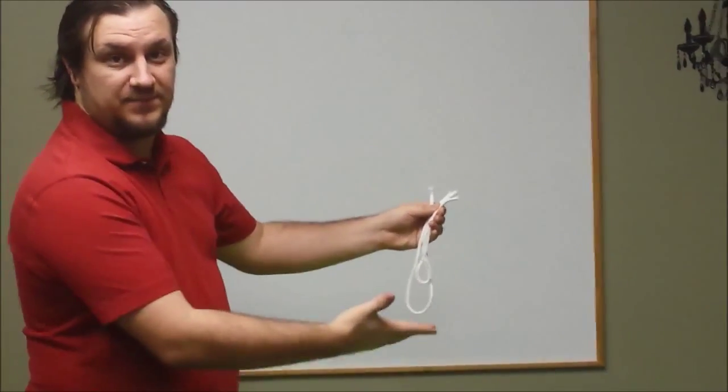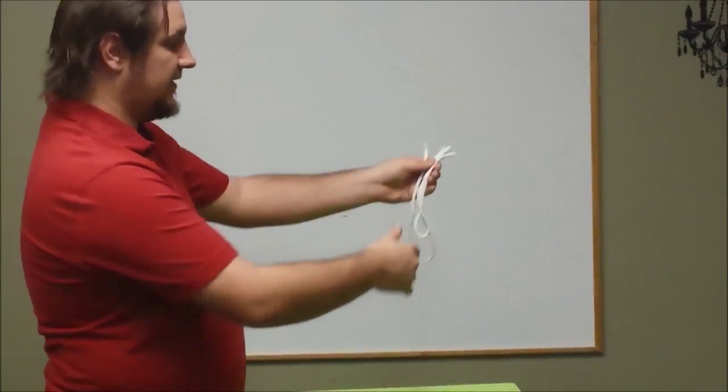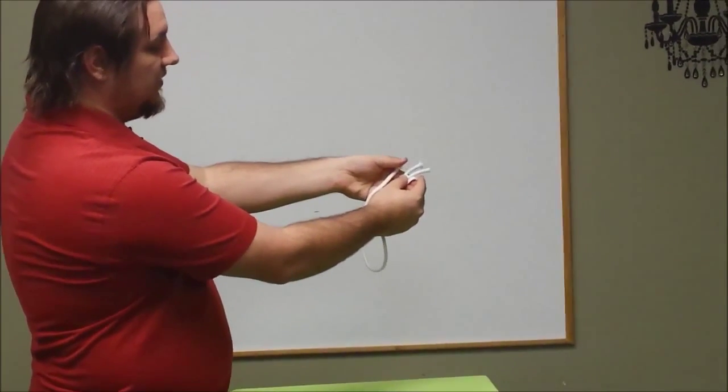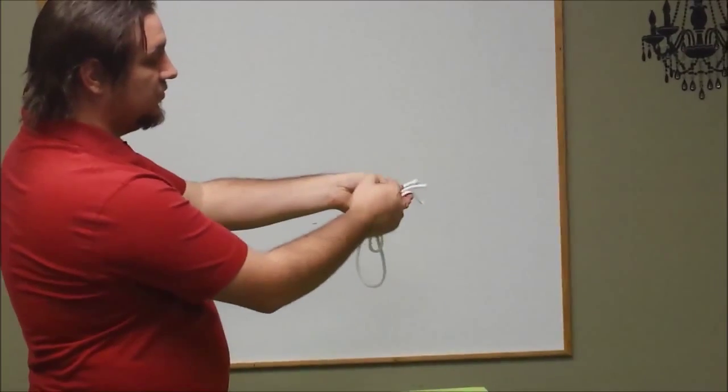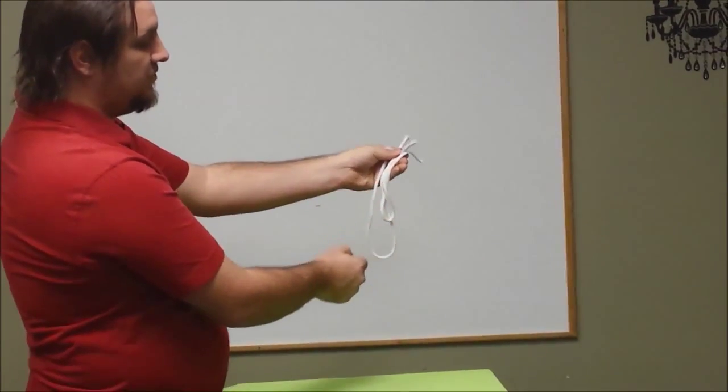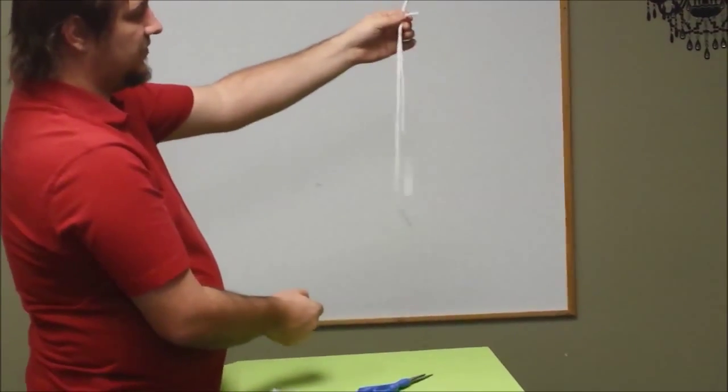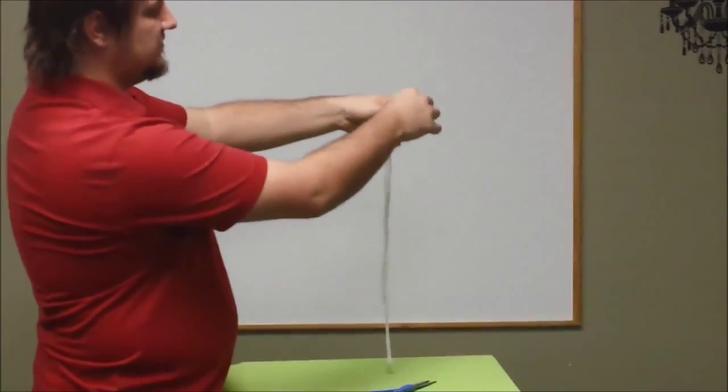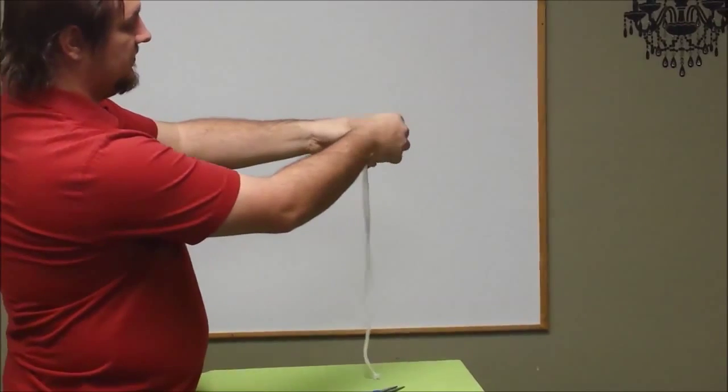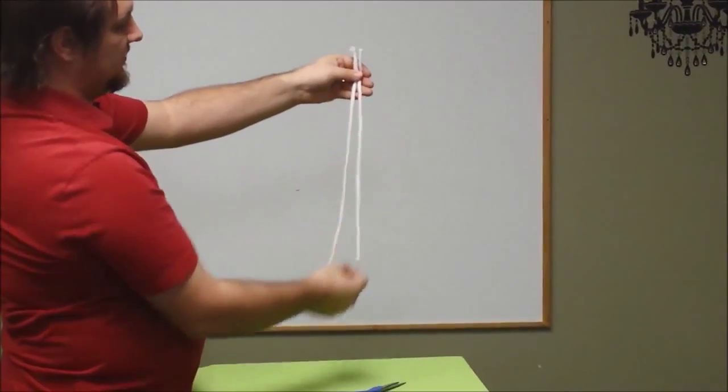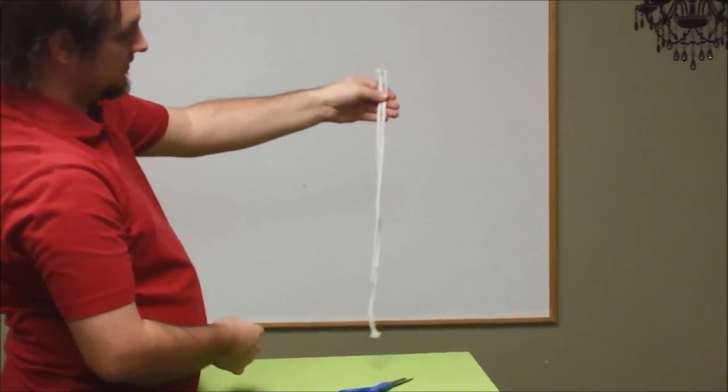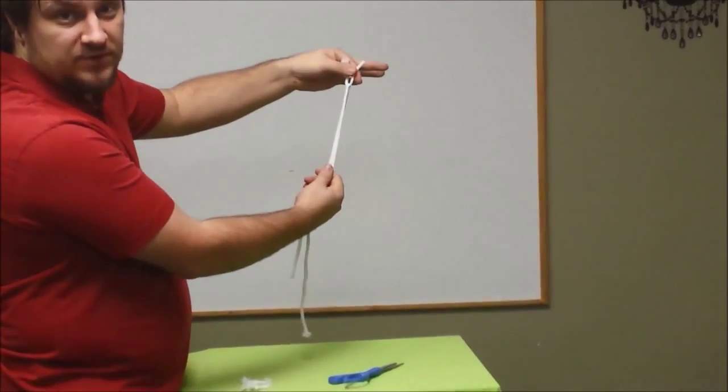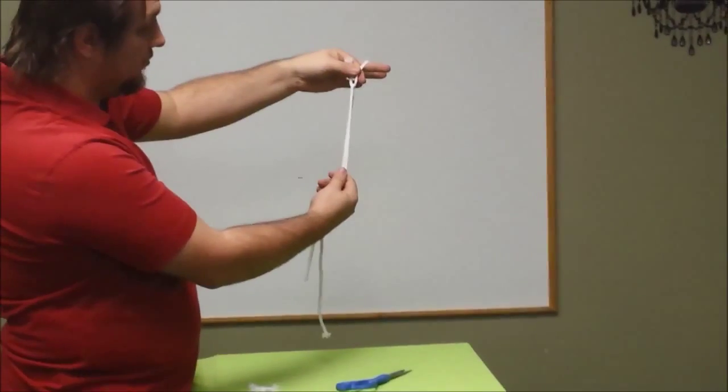So then what you want to do is be able to drop this with it still looking like two pieces of rope in your hand. And so if you look, what that's done is it's created two loops through one another, so you can just pinch this, drop the rest, and you've got what seems to be, if you cover your thumb over this, it's what seems to be two pieces of rope, but really it's two pieces of rope, one small one and one long one, looped through one another.